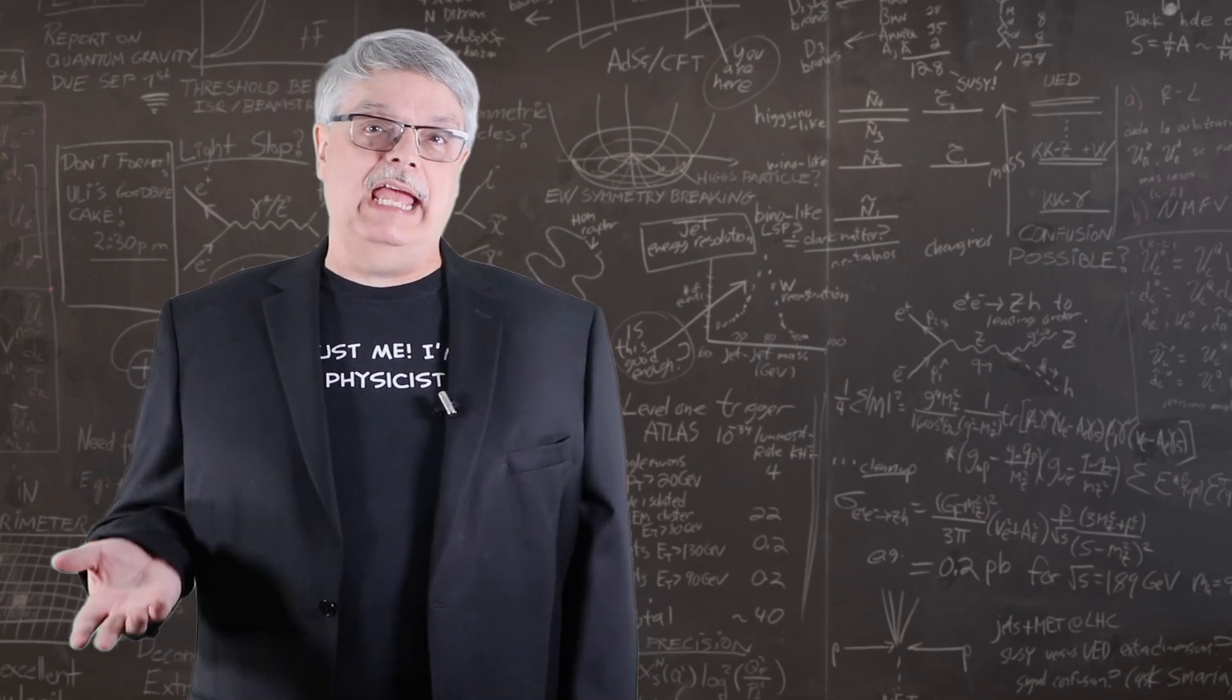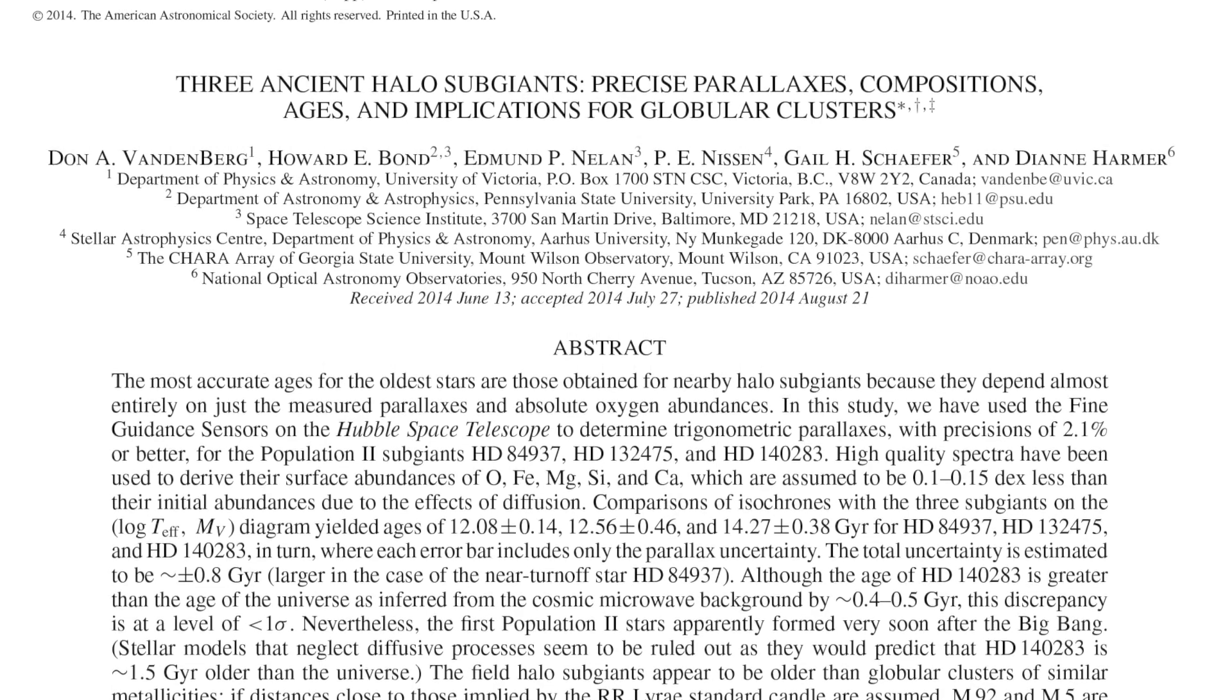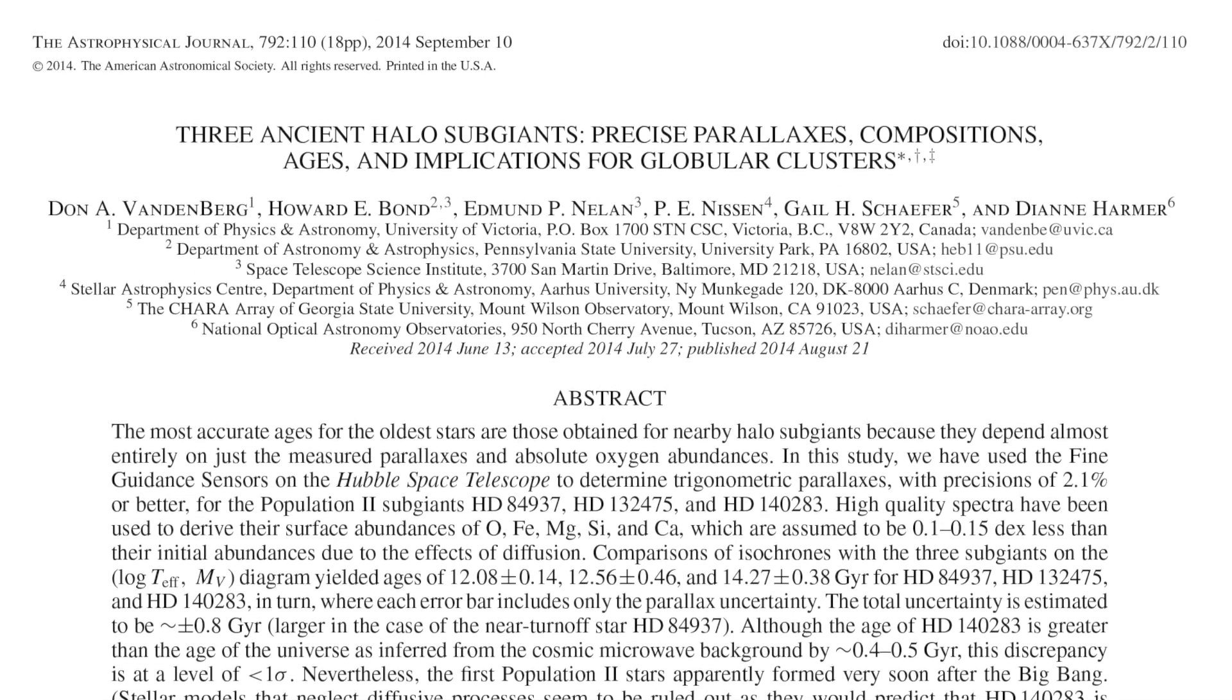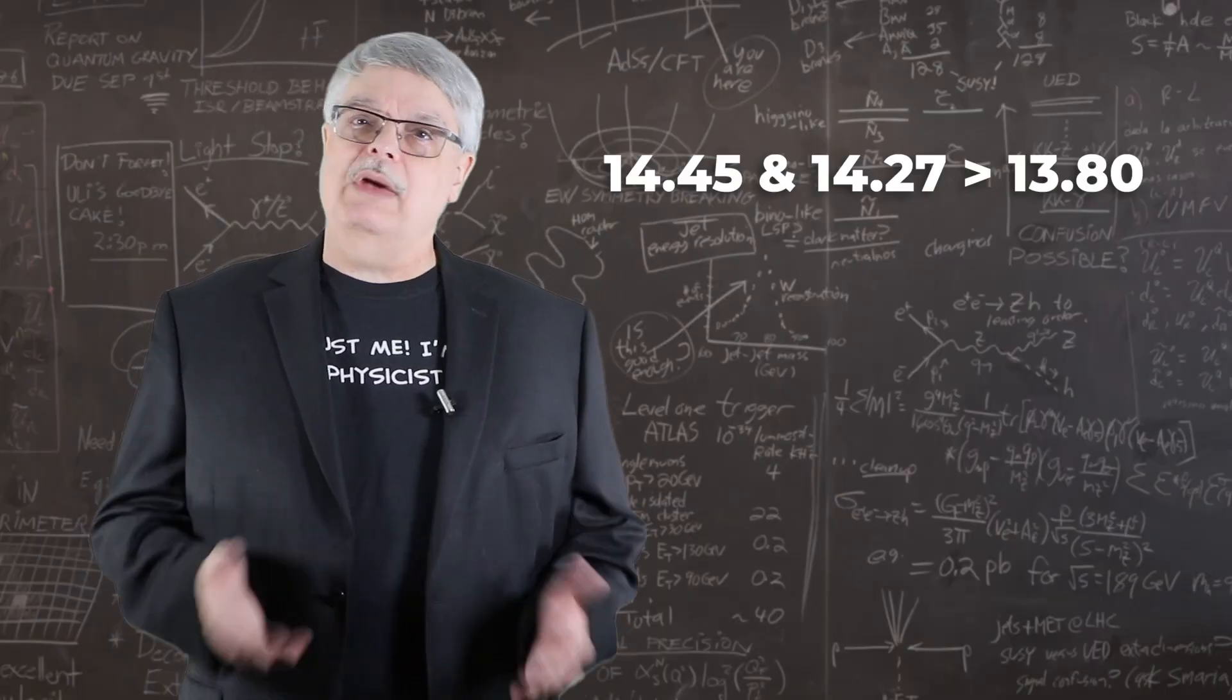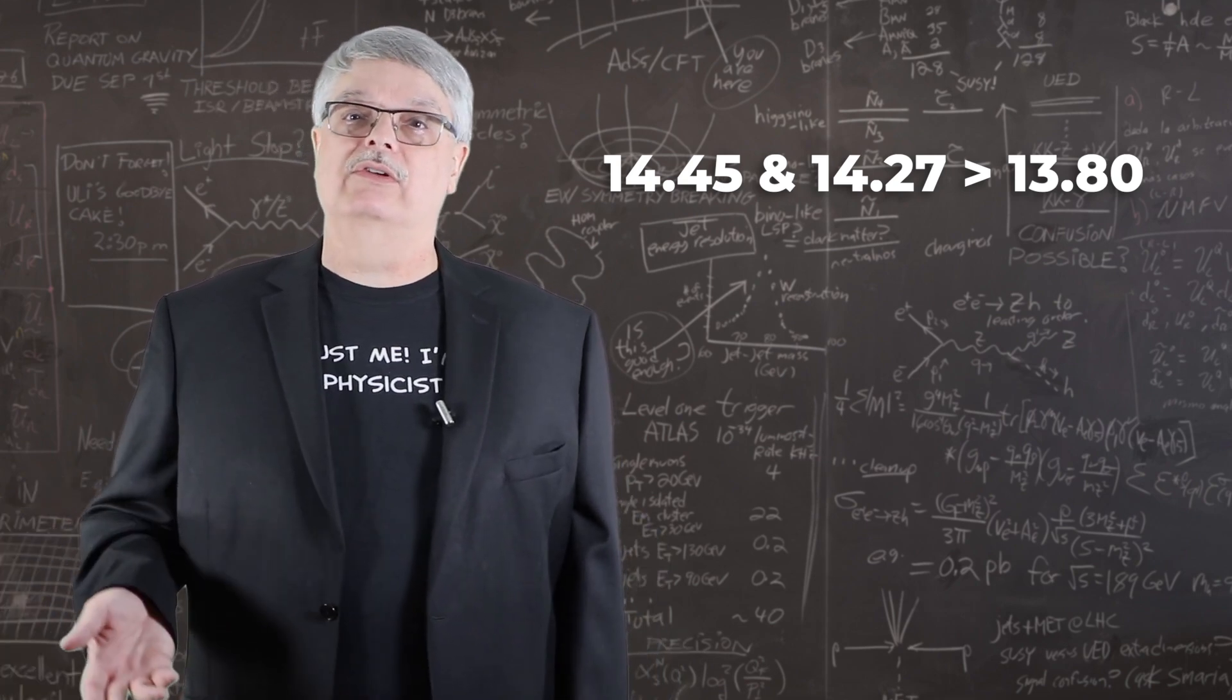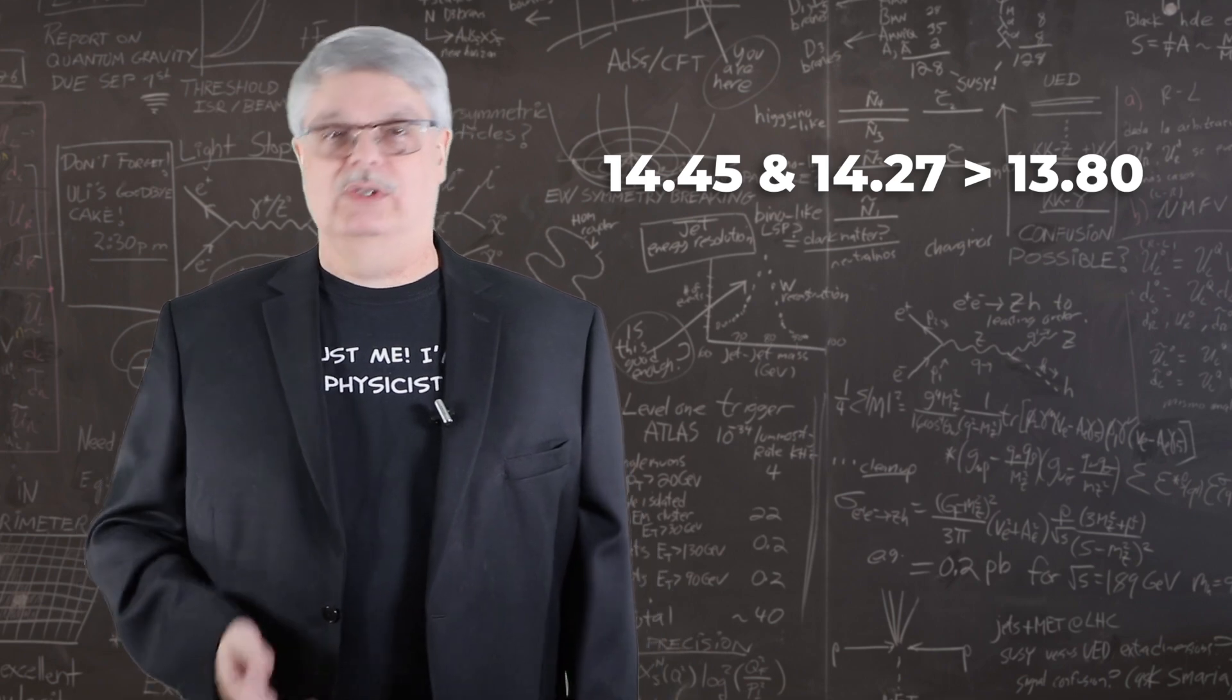A second estimate for the age of the Methuselah star was published in 2014. This estimate was a bit younger, specifically 14.27 billion years, with the same uncertainty of 0.8 billion years. I put a link in the description to that paper as well. But no matter which estimate you use for the age of the Methuselah star, you can't but notice that they are both older than the universe, which is an obvious problem, and one on which people who dislike the Big Bang often point to as a fatal flaw.